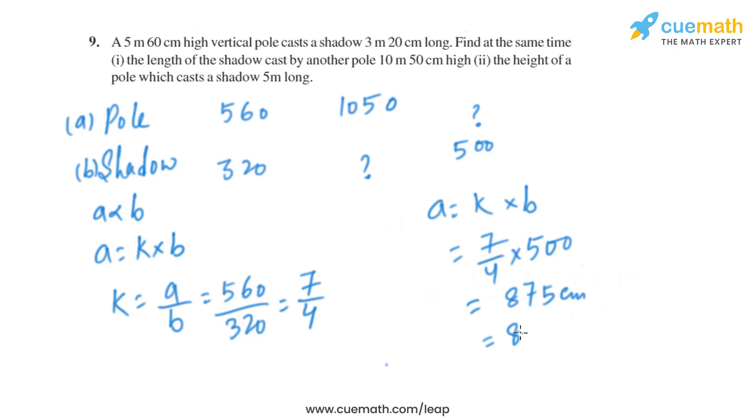Or we can say that it is 8 meter and 75 centimeter. So when the length of shadow is 5 meter, the height of the pole will be 8 meter and 75 centimeter.